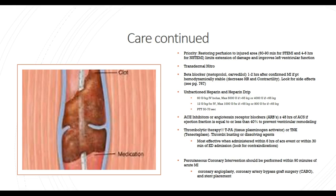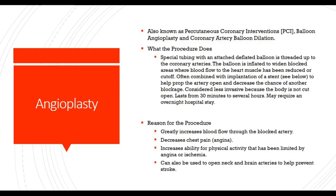Percutaneous coronary interventions should be performed within 90 minutes of acute MI. These include coronary angioplasty, coronary artery bypass grafting, and stent placement. Look for signs that a clot has been lysed or dissolved — those indications are on the diagram.